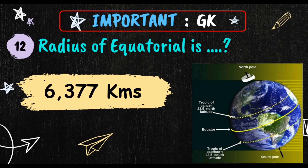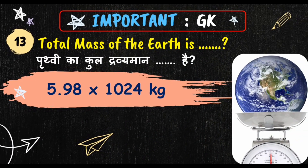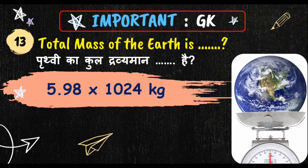The radius of the equatorial of the earth is 6,377 kilometers. An equator is an imaginary line around the middle of the earth which divides the North Pole and South Pole. The total mass of the earth is 5.98 into 10 to the power 24 kg.